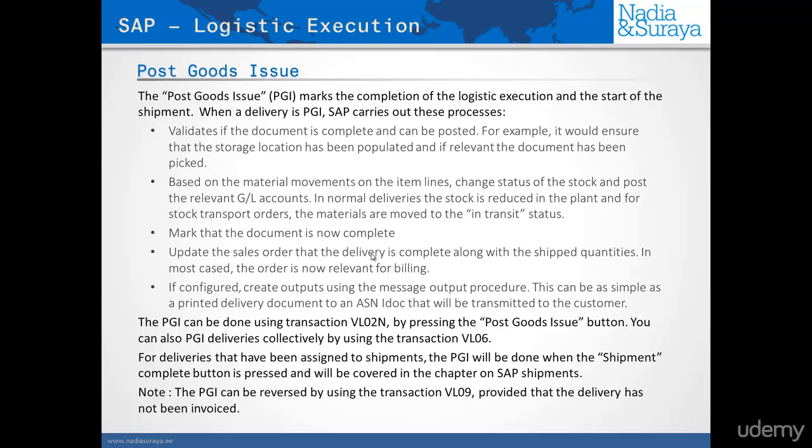When we do a post goods issue, or PGI, in SAP it carries out a number of important steps. There are more but these are the most important ones that you should know. The first thing it does is validate the document to see that all of the fields it requires have been correctly populated so that the document can be posted — for example, it makes sure that the storage location has been filled in, the picking has been done, and so forth.